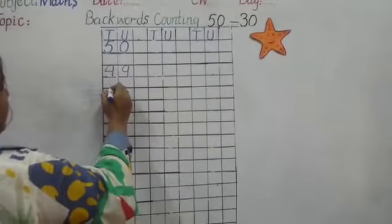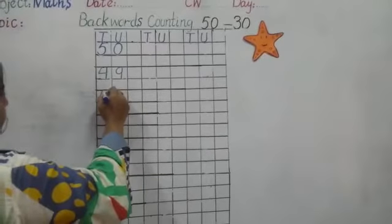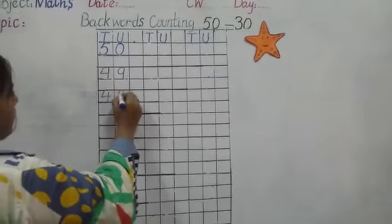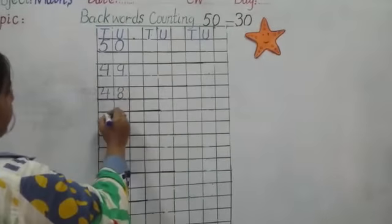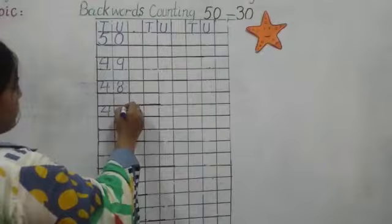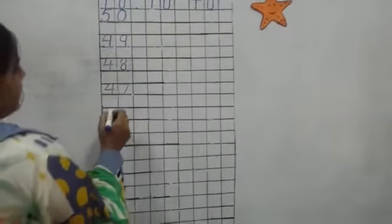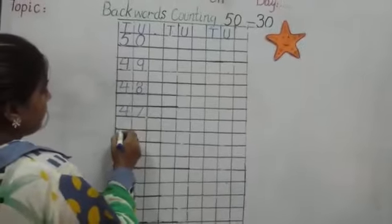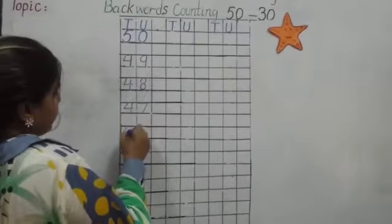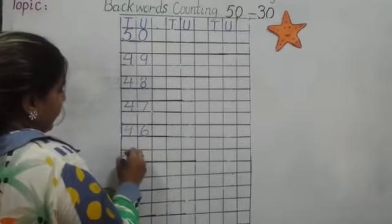And what comes before 49? Yes students, there will come 48. Then there will come 47. Then students, you have to write before 47. What comes before 47? 46. Then we will write 45.